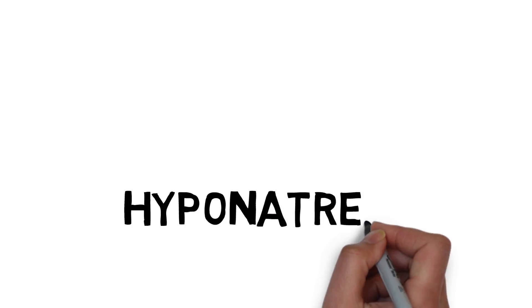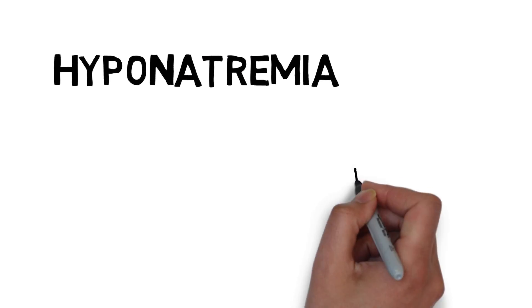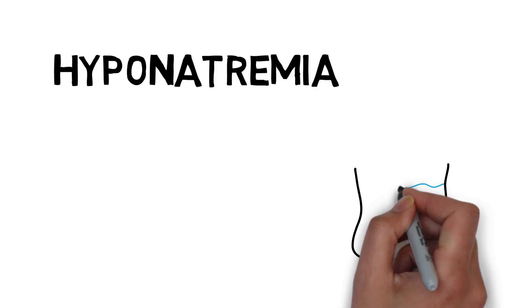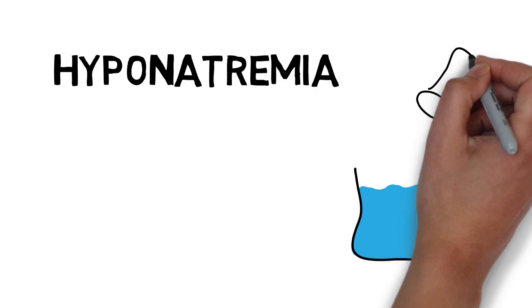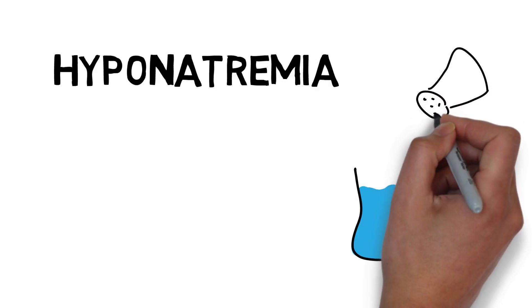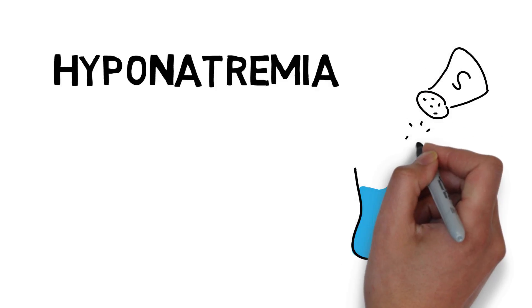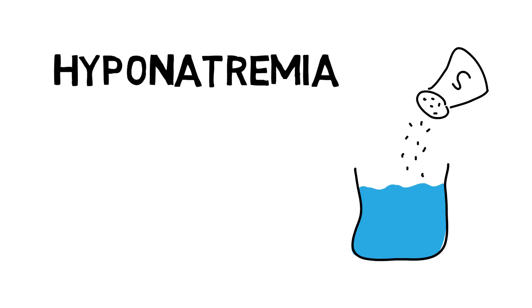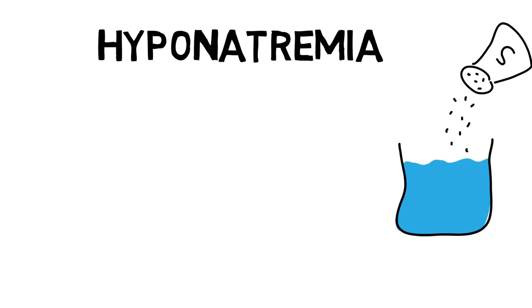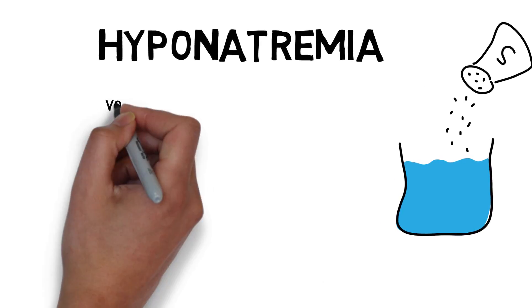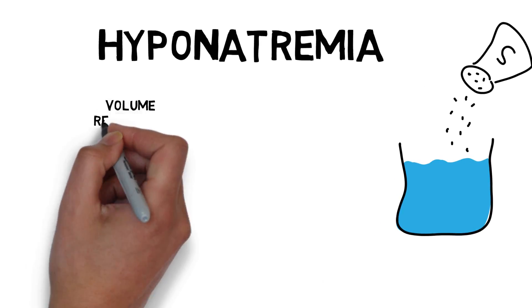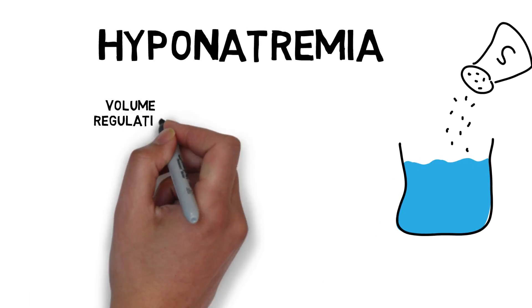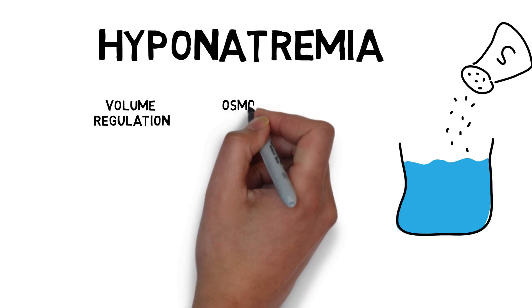Hyponatremia occurs when there is an imbalance between the amount of bodily water and the amount of bodily salt or sodium. An important concept to remember is that in extreme circumstances, volume regulation trumps osmoregulation.